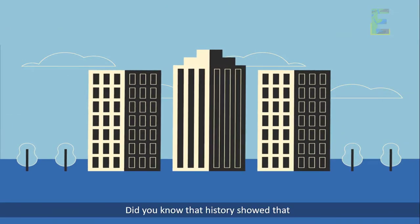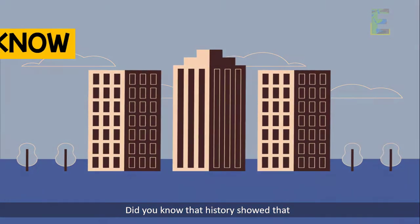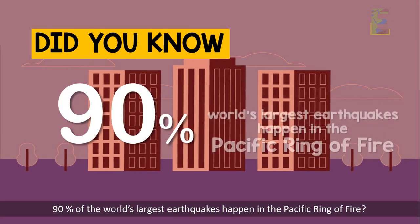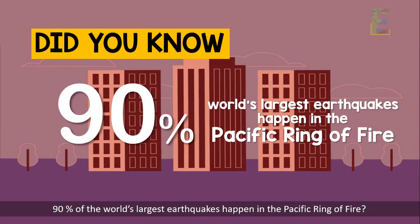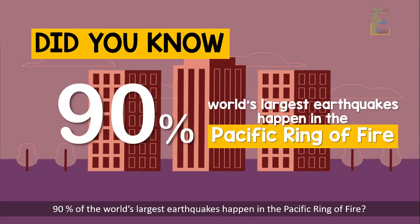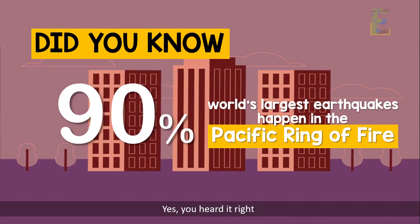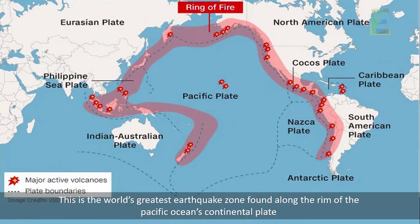Did you know that history showed that 90% of the world's largest earthquakes happen in the Pacific Ring of Fire? Yes, you've heard it right! This is the world's greatest earthquake zone found along the rim of the Pacific Ocean's continental plate.